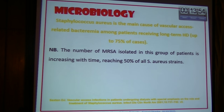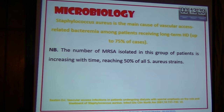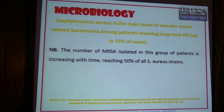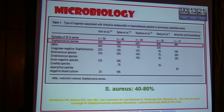Regarding the microbiology of organisms causing infective endocarditis in this patient group, the number of MRSA isolates is increasing over time and may reach up to 50% in some series. Studies show that Staphylococcus aureus is the most common microorganism, and it may reach 80% in some studies.